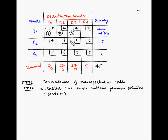Since P1 is exhausted but D3 still has remaining demand, we move down to P2D3. P2 has a supply of 15 and D3 has a remaining demand of 14, so we allocate 14 units. The remaining demand for D3 is now 0, and the remaining supply capacity for P2 is 15 minus 14 = 1 unit. D3 is completely satisfied, but P2 still has capacity, so we continue with P2 and move right to P2D4.